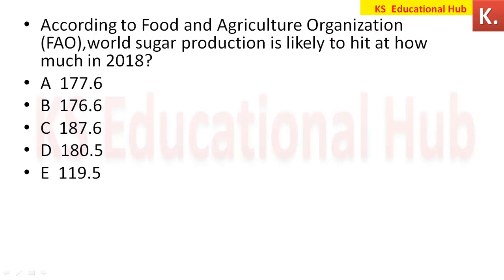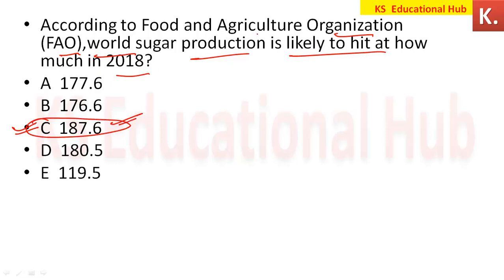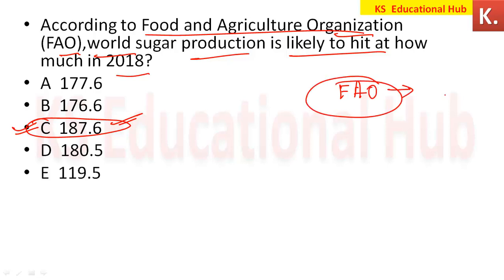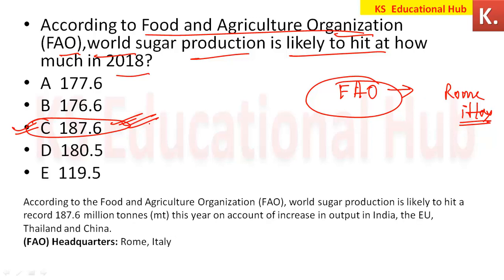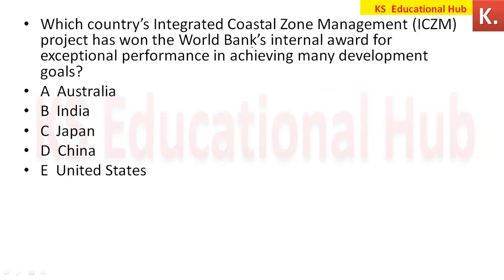According to the Food and Agriculture Organization (FAO), world sugar production is likely to hit 187.6 million tons in 2018. If asked about FAO's headquarters, it is in Rome, Italy. The target is 187.6 million tons.